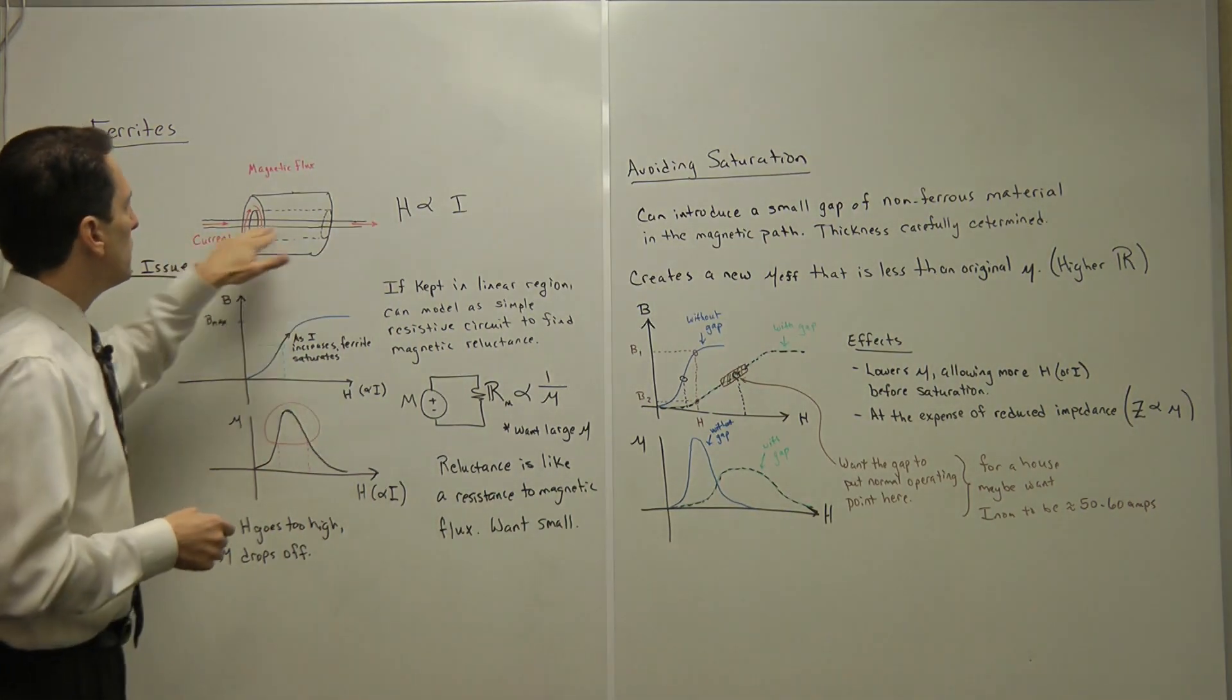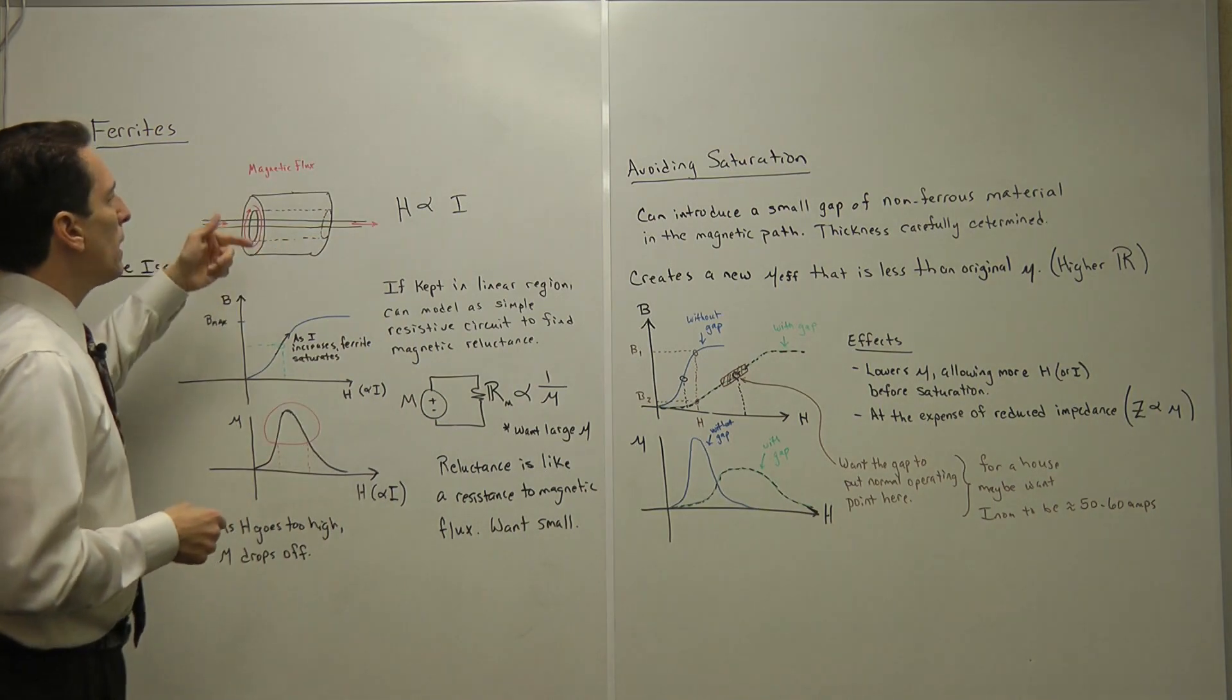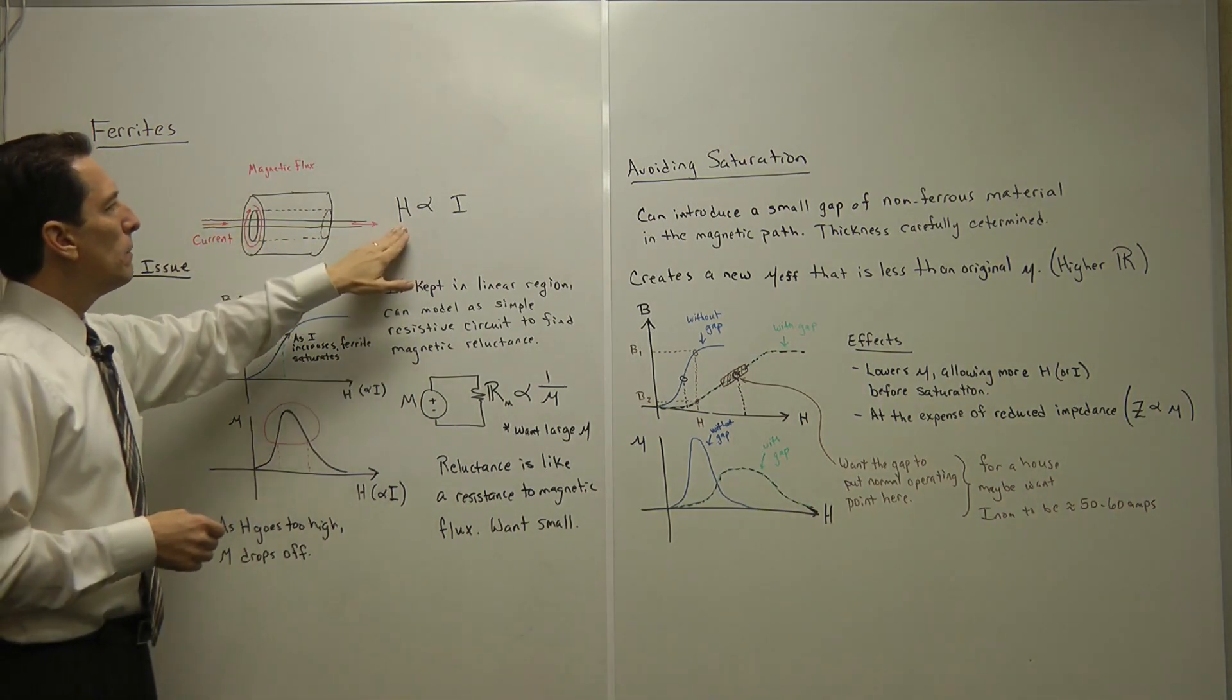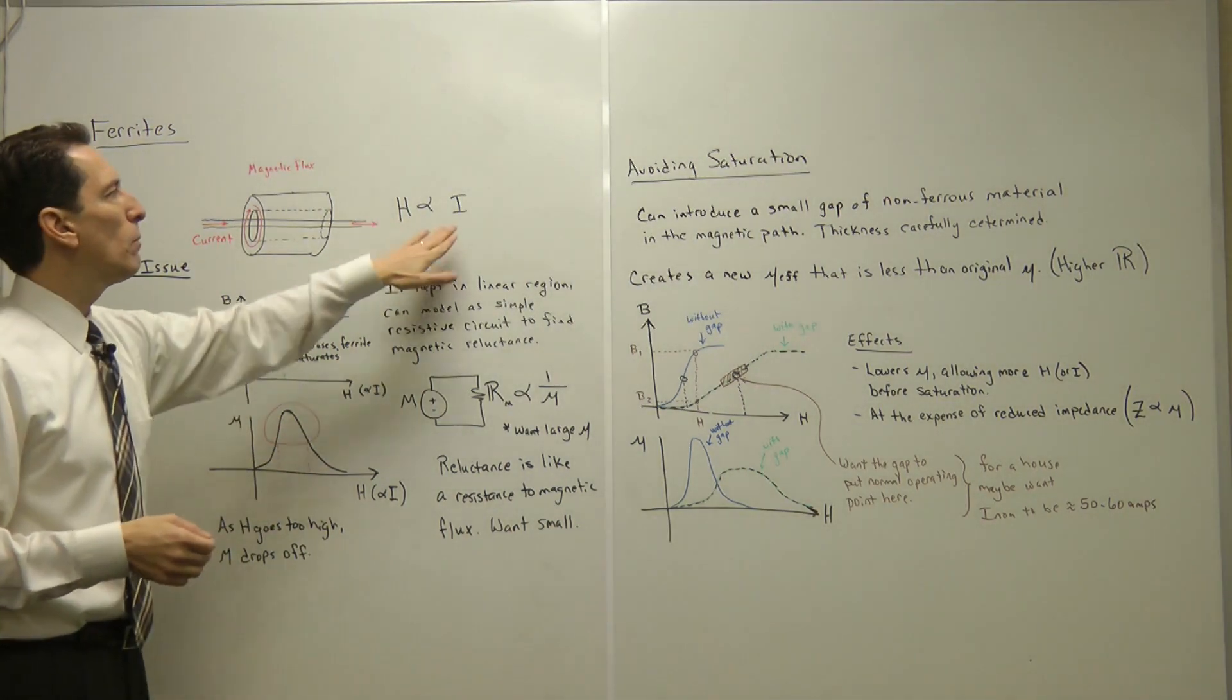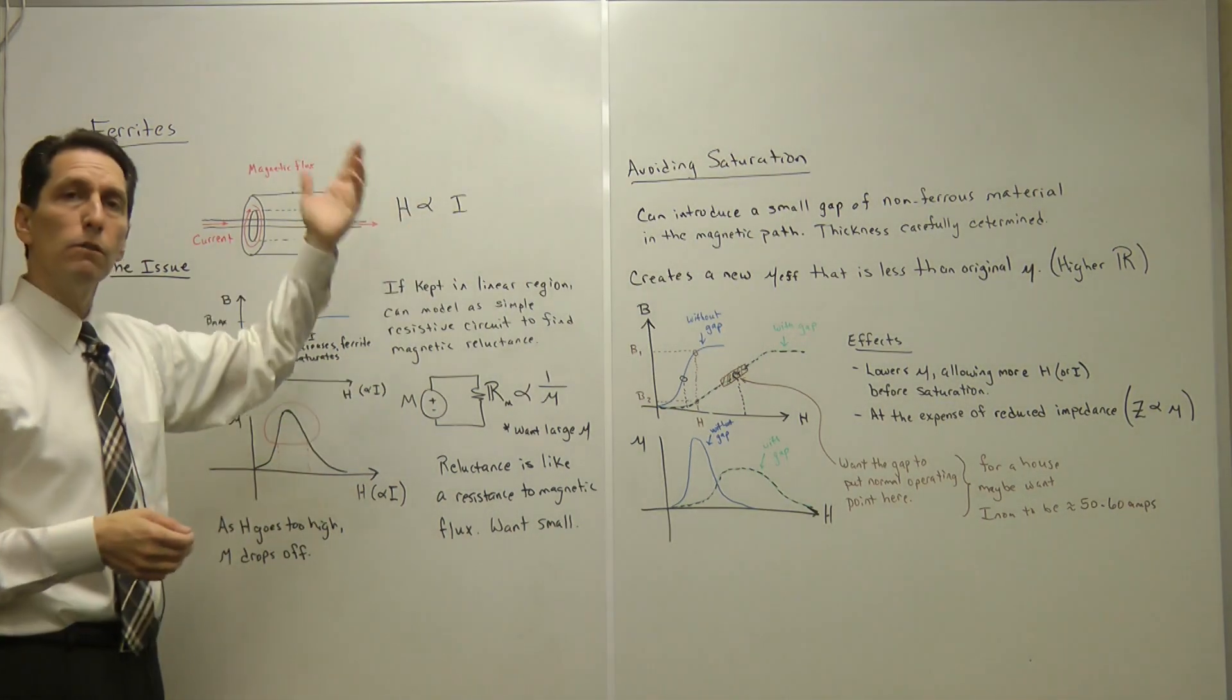Now, that current that comes through here is related to the magnetic field that's developed. The magnetic field is proportional to the current. I won't write out the whole formula, but just know that they're proportional to each other. If current goes up, the magnetic field goes up.